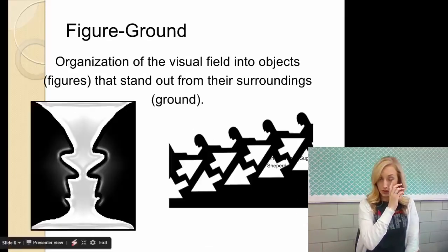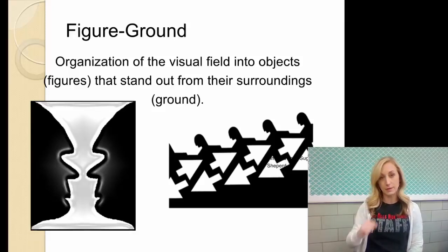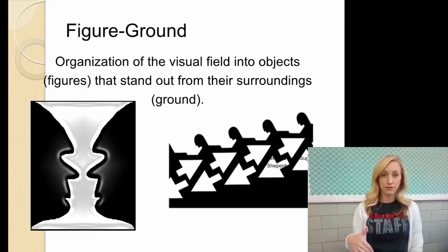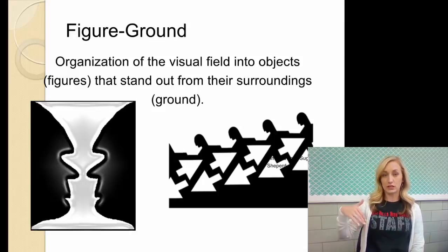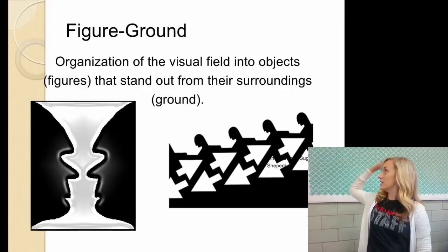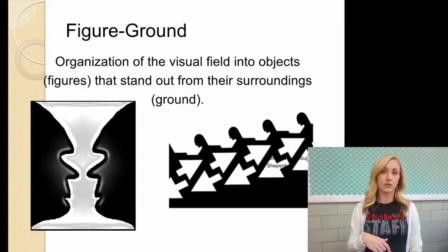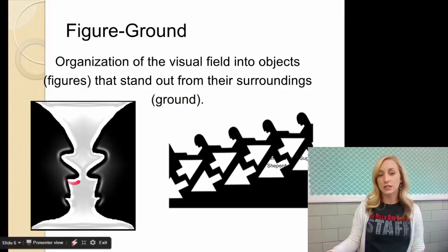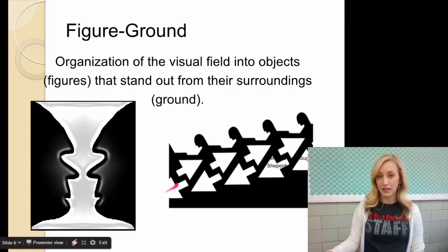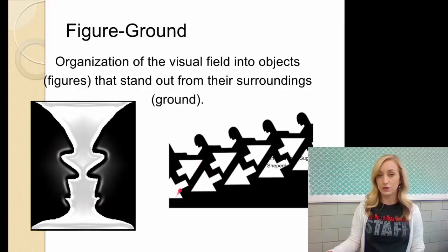Each one of these next few terms are gestalt principles. And yes, they're on the test. And yes, they're on the AP exam. Figure ground as a gestalt principle. So this is when we organize our visual field into the objects, which is the figure, that stand out from their surroundings, which is the ground. For instance, if you look at me in the corner of your screen right now, you know that I am the figure and that this is the background. That's figure ground, a gestalt principle. These illusions make it very difficult for you to establish which is the figure and which is the ground. So is the vase the figure or are the two faces the figure and what's the background? And then do you see the people going down the stairs or do you see the two sets of arrows here?